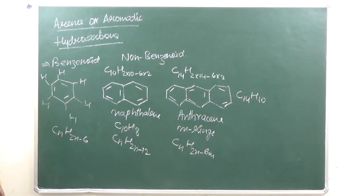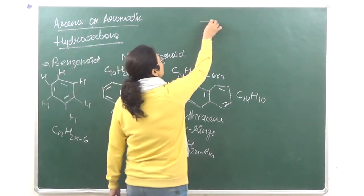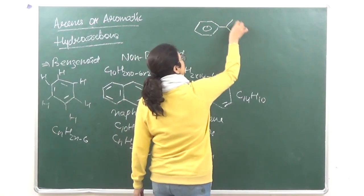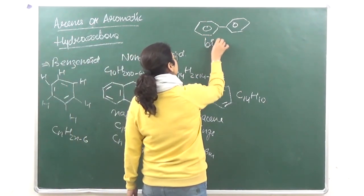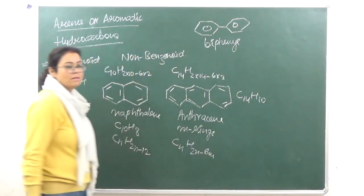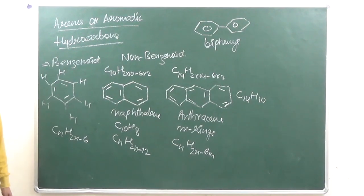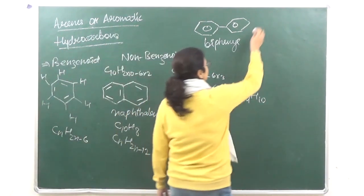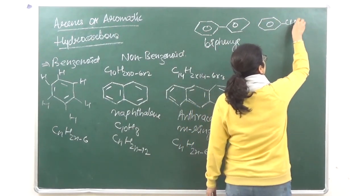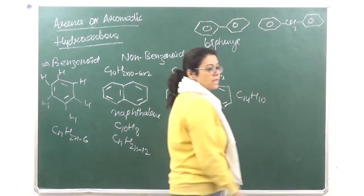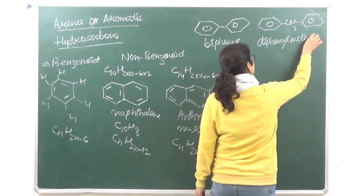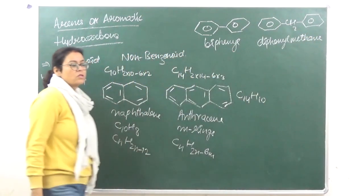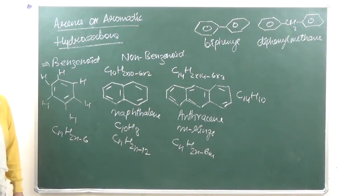Sometimes independent rings may also be present — that is, rings that do not share a common wall. When two phenyl or benzene rings are connected by a single bond, that compound is known as biphenyl or diphenyl.